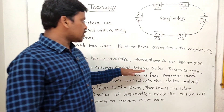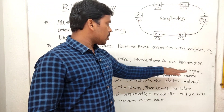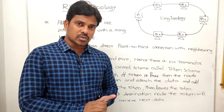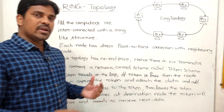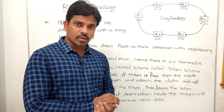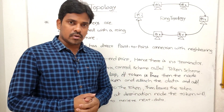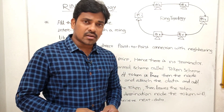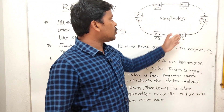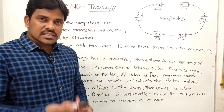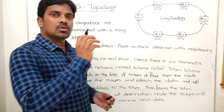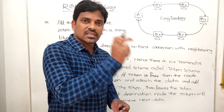Ring topology contains a network control scheme called the token scheme. This means the token scheme controls how data is shared across the network. This is the network control scheme.